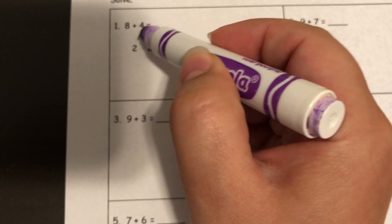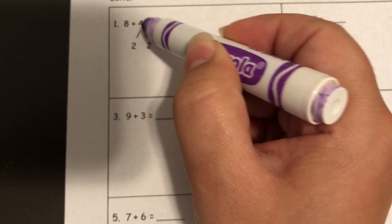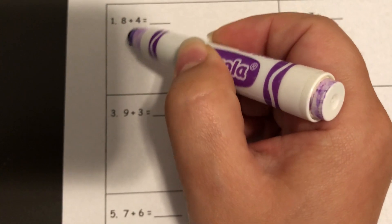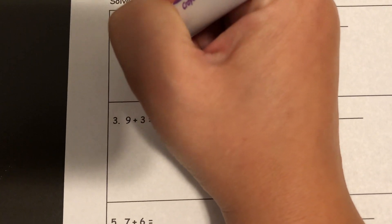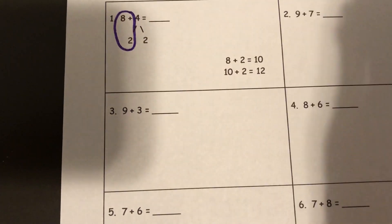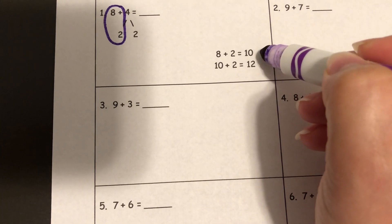So they went over to the 4, they pulled out a 2, and then there's 2 left in the 4. So it's just showing you a number bond: a 4 is made up of a 2 and a 2, and they added the 8 and the 2 together, which they show right here. 8 plus 2 equals 10.